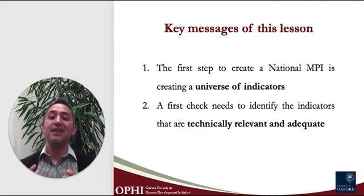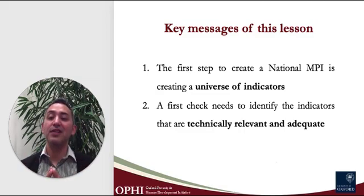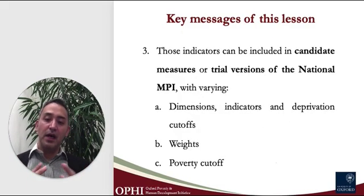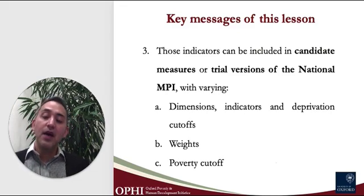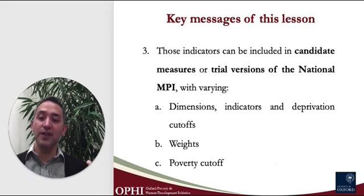In fact, the overlapping deprivation of those two indicators can actually be used as a way to measure the intensity of multidimensional poverty. A third key message of the lesson is that once the universe of indicators has been refined, one can then move on to the process of envisioning candidate measures, or trial versions of the National MPI.